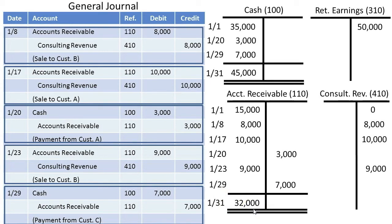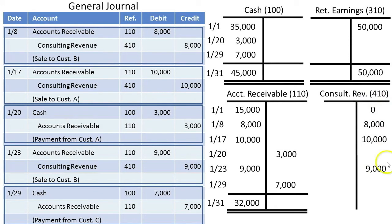Retained earnings stays at a $50,000 credit because the closing process has not yet been performed. All the temporary accounts — in this case, consulting revenue — still have their balances and have not yet been closed into retained earnings.